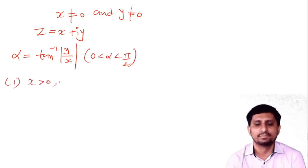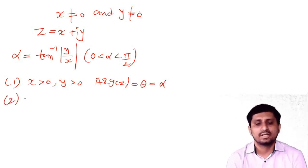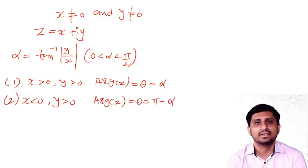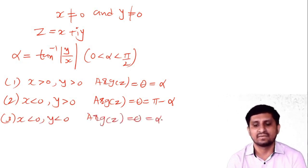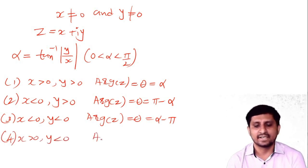The quadrant rules are: if x > 0 and y > 0 (first quadrant), principal argument θ = α. If x < 0 and y > 0 (second quadrant), θ = π − α. If x < 0 and y < 0 (third quadrant), θ = α − π. If x > 0 and y < 0 (fourth quadrant), θ = −α.